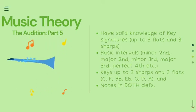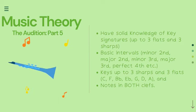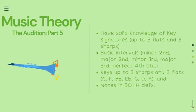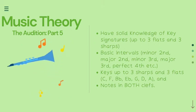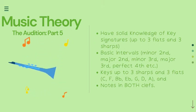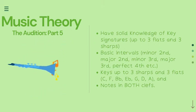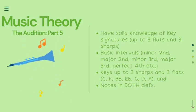Audition Part 5 - Music theory: Have solid knowledge of key signatures up to 3 flats and 3 sharps, and basic intervals — minor 2nd, major 2nd, minor 3rd, major 3rd, perfect 4th, etc. — in keys up to 3 sharps and 3 flats.